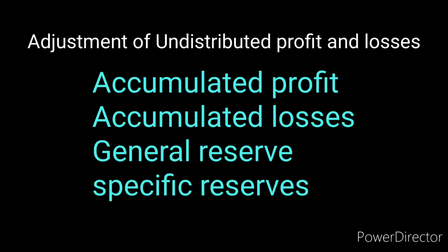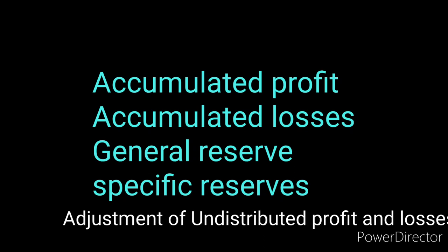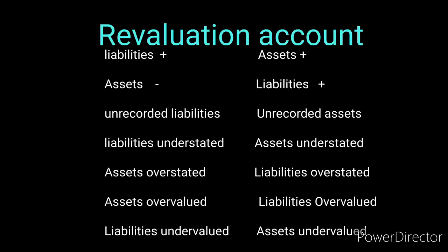Adjustment of undistributed profits and losses: accumulated profits will be credited to partners' capital accounts; accumulated losses will be debited to partners' capital accounts. For reserves — general reserves will be distributed directly to existing partners' capital accounts in their existing profit and loss sharing ratio. For specific reserves, claims against them will first be settled; if excess reserves remain, those will be distributed to existing partners in their existing profit and loss sharing ratio.